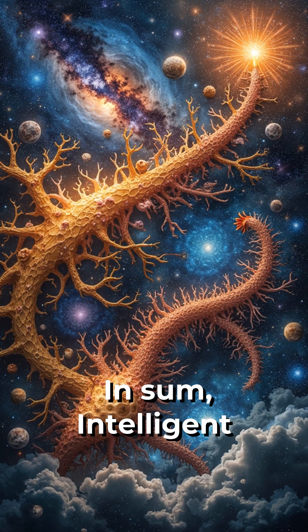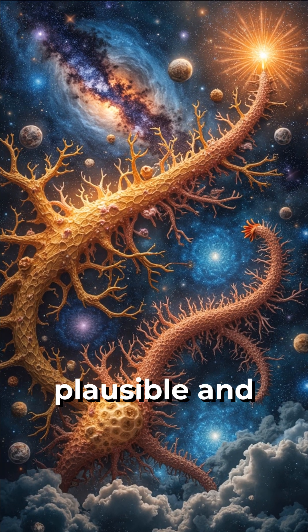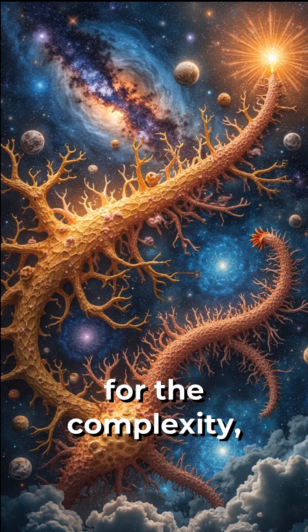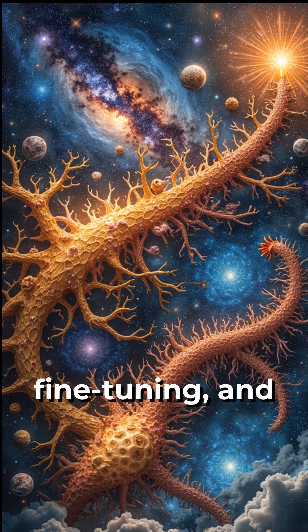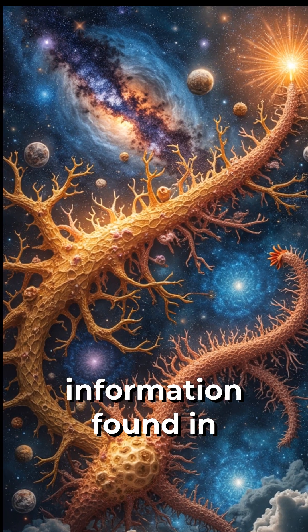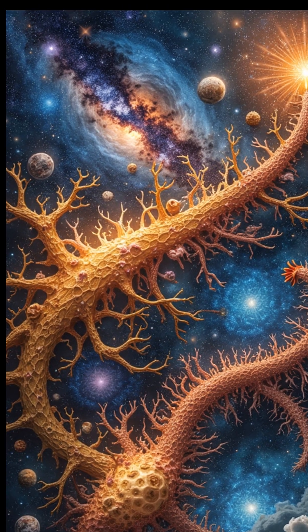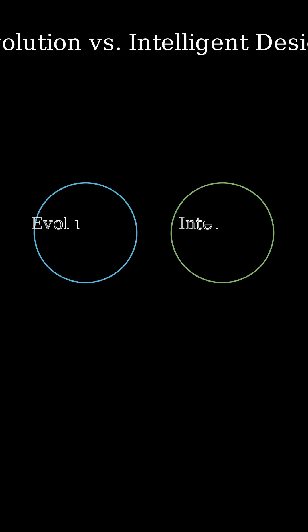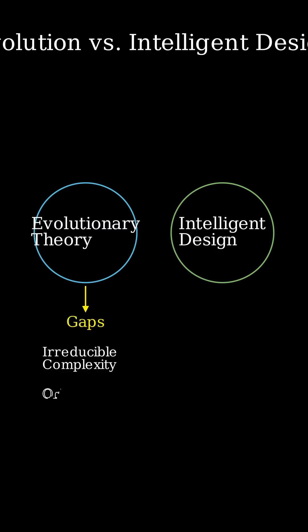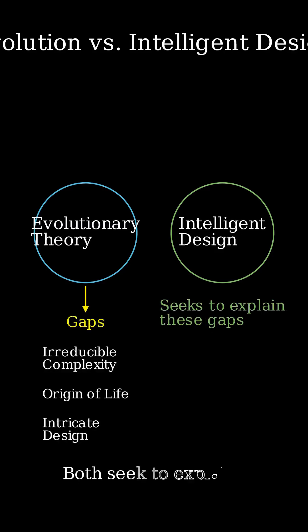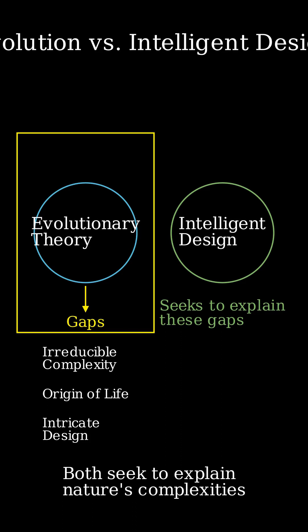In sum, intelligent design offers a more plausible and coherent explanation for the complexity, fine-tuning, and information found in biological and cosmological systems. Evolutionary theory, while attempting to explain these phenomena through random mutation and natural selection, leaves significant gaps unfilled, especially in light of irreducible complexity, the origin of life, and the intricate design seen in nature.